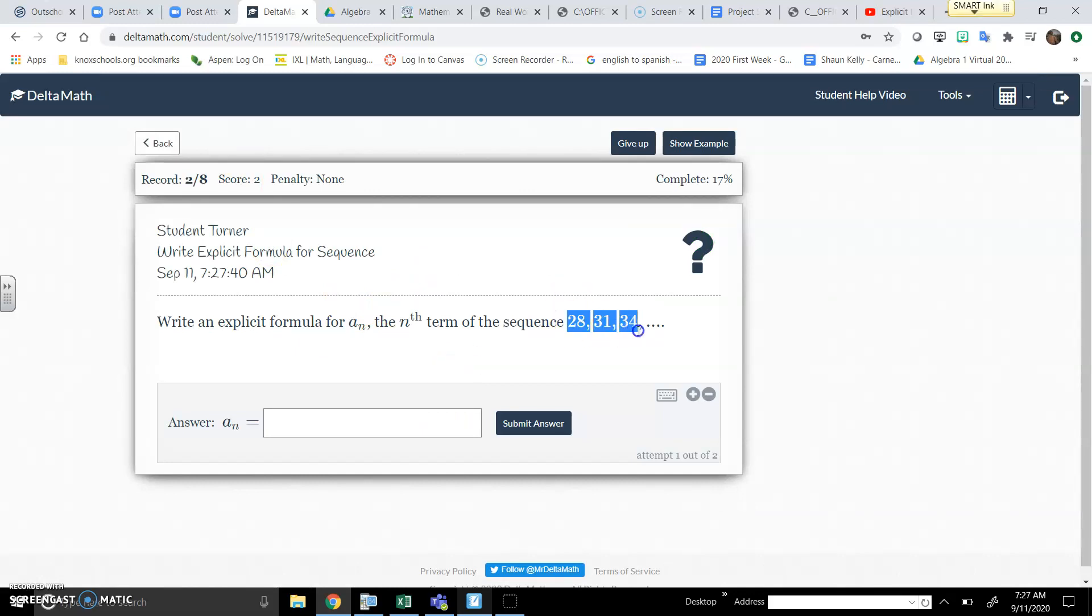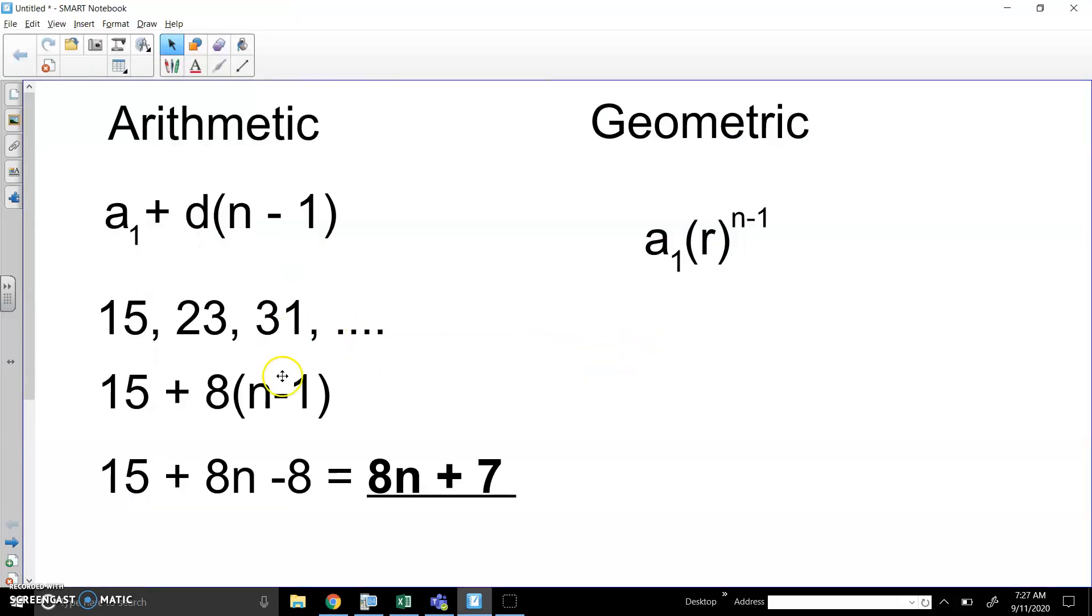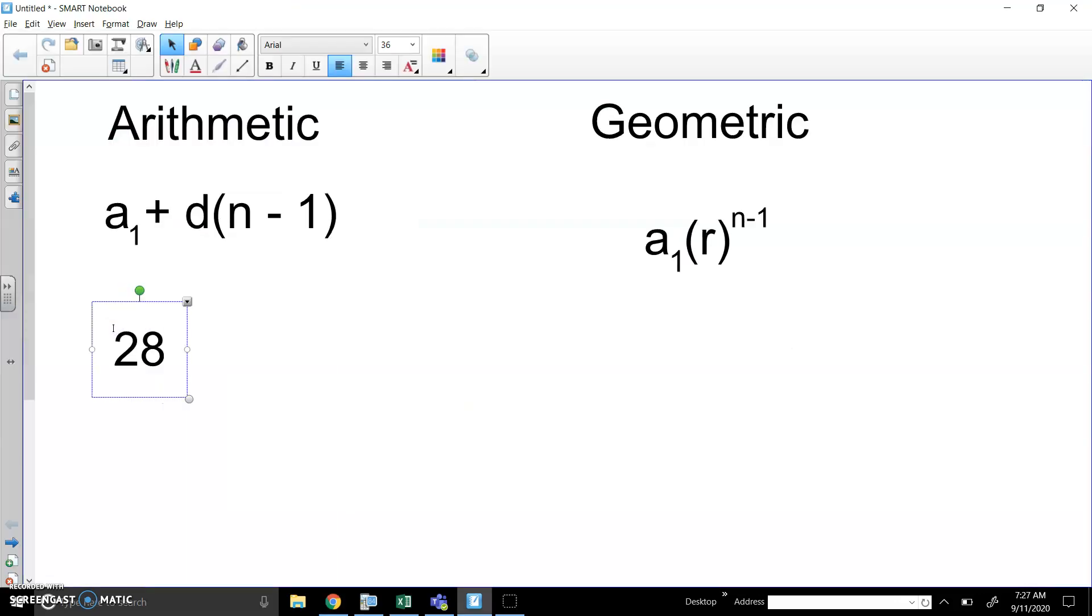I'm going to do another one. This one seems to be also an arithmetic. You're adding 3 over and over and over. So let's just start over with this one. This would be 28, 31, 34. The first thing I think about is this seems to be adding 3 over and over. If you do 31 minus 28, you'll see that 3. So I'm going to start using the formula now. 28 is the first number. You are adding 3 each time. And then N minus 1 is just a part of the formula.